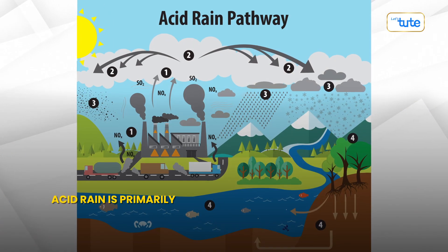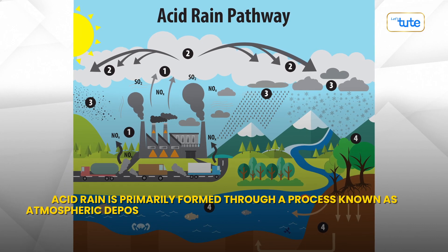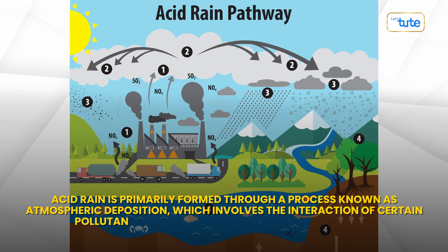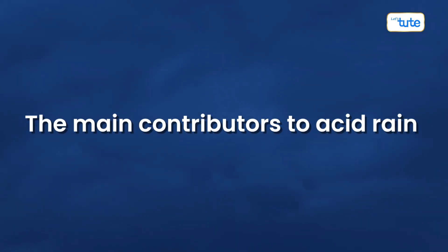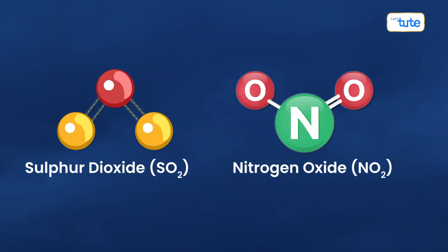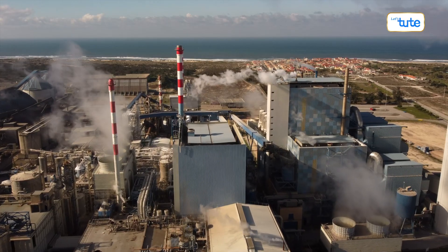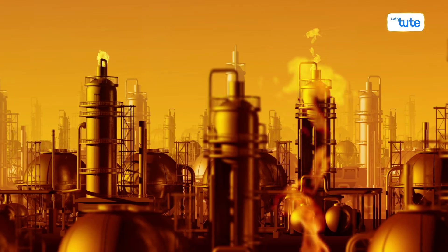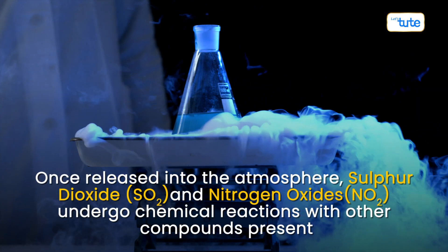Acid rain is primarily formed through the process known as atmospheric deposition, which involves the interaction of certain pollutants with the atmosphere and precipitation. The main contributors to acid rain are sulfur dioxide and nitrogen oxides — emissions released into the air primarily from human activities such as burning fossil fuels, industrial processes, and vehicle exhaust.